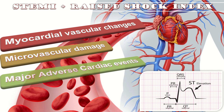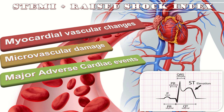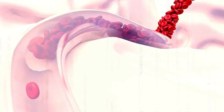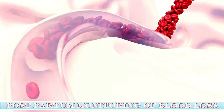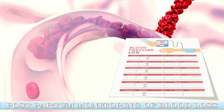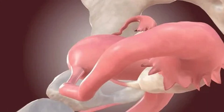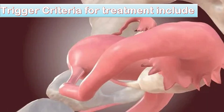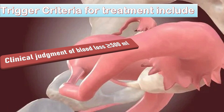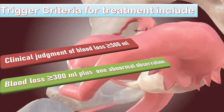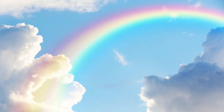For postpartum monitoring of blood loss, uterine tone is checked every 15 minutes and documented on a blood loss monitoring chart, along with blood pressure and pulse monitored once in the first hour postpartum. The trigger criteria for treatment include clinical judgment of blood loss of more than 500 mls, or blood loss of more than 300 mls plus one abnormal observation.